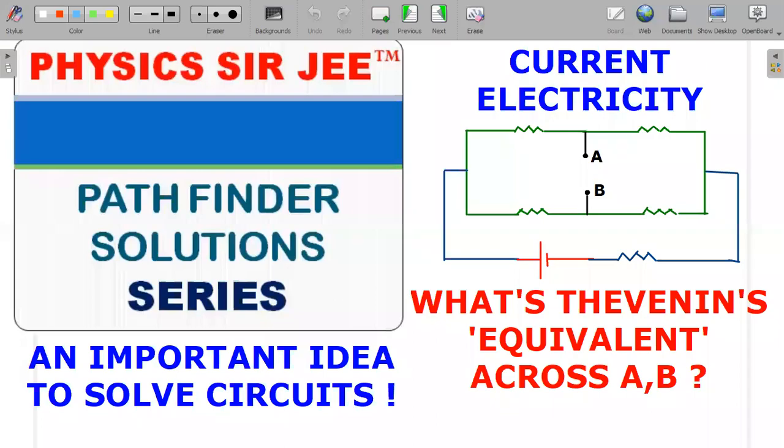Hey you guys, welcome back to the channel Physics Sir JEE, and this is Pathfinder Solutions series. We are in the chapter of Current Electricity. This is an objective type question given in the book that usually bugs students about how to actually solve this question.